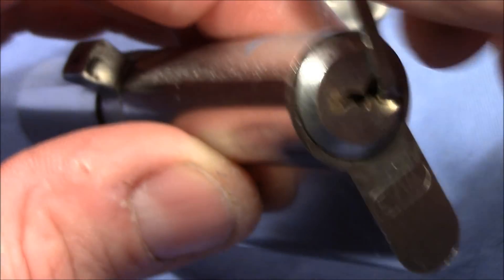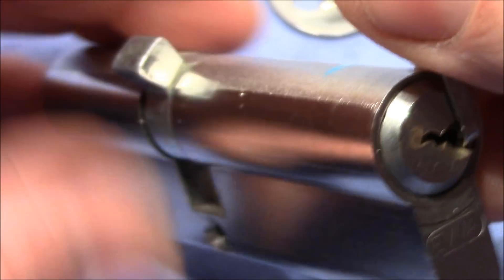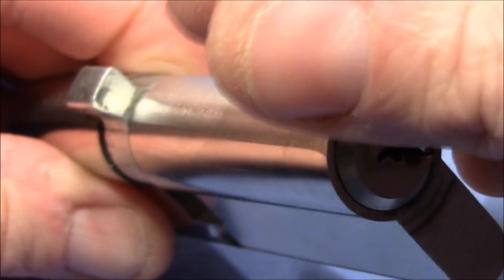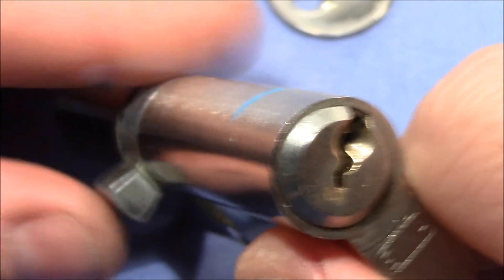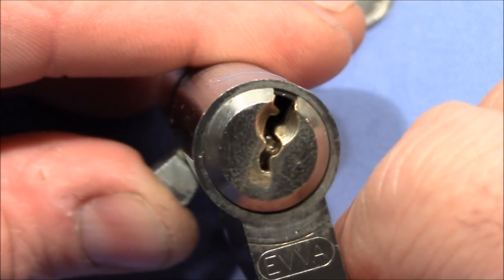Here we go, you can see it turns and also the actuator turns along. So that's the picking of our front door lock, pretty easy pick.